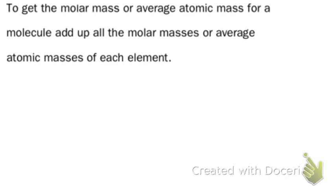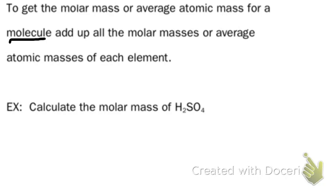So to get the molar mass or average atomic mass for a molecule, add up all of the molar masses or average atomic masses from each element. All right, so right now we need to calculate the molar mass of H2SO4. So the first thing we're going to have to do is talk about each individual mass. And so the first way we're going to do this is hydrogen. I know that hydrogen has an average atomic mass or molar mass of 1, and I know that I have two hydrogens. So that 2 is right there. This 1 comes from the periodic table.